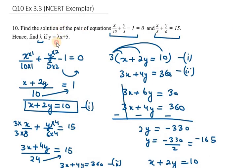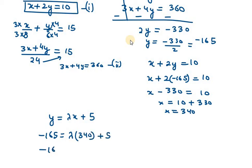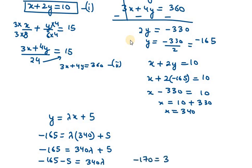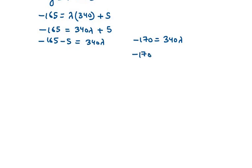Now we need to find the value of lambda from y equals lambda x plus 5. Substituting y equals minus 165 and x equals 340: minus 165 equals 340 lambda plus 5. Bringing 5 to the left-hand side: minus 165 minus 5 equals 340 lambda, so minus 170 equals 340 lambda. Therefore lambda equals minus 170 over 340, which reduces to minus one-half. Lambda equals minus half.